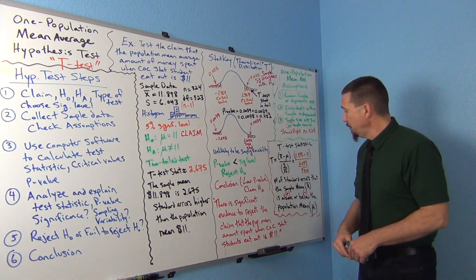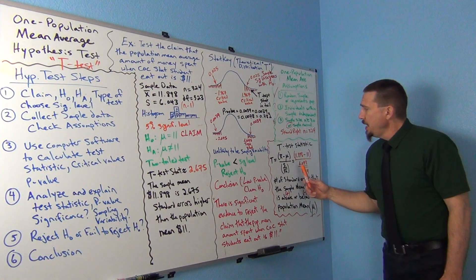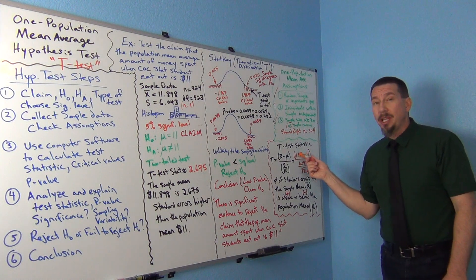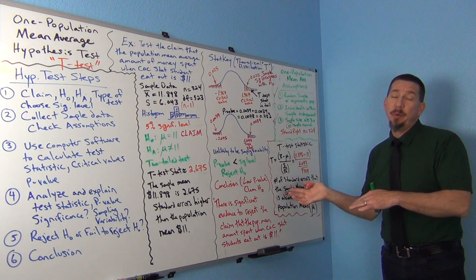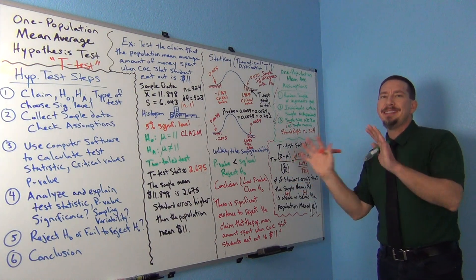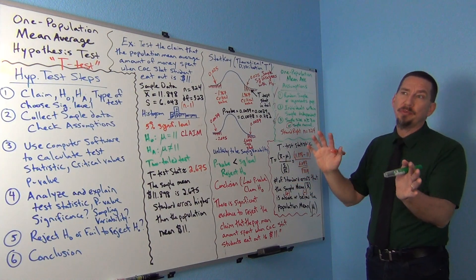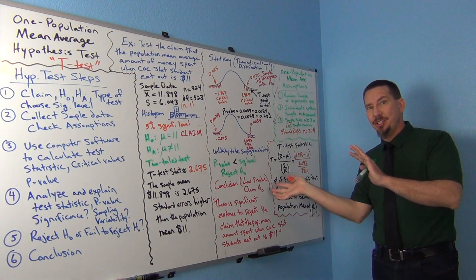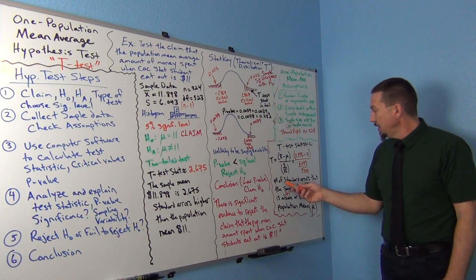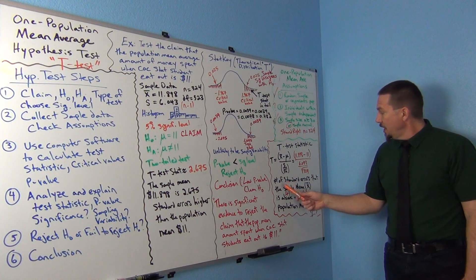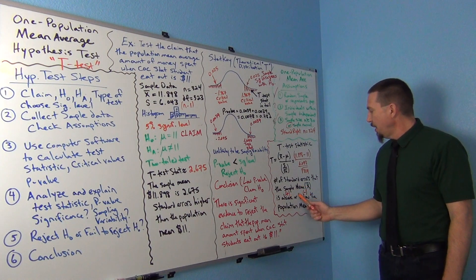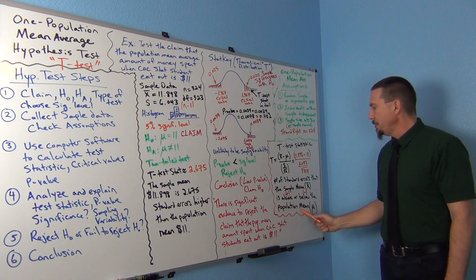It is positive. The t-test statistic in some ways works a lot like the z-test statistic we looked at for proportions — it's counting how many standard errors the sample is from the population parameter. In our case, it tells us the number of standard errors that the sample mean is above or below the population mean.